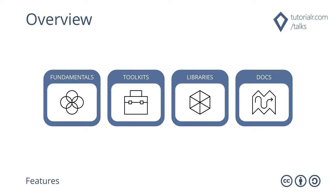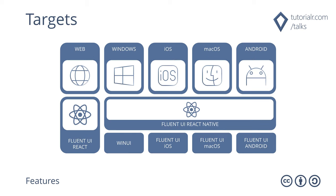Fluent Design System can be implemented in code to deliver coherence through controls and design patterns with UI libraries across a variety of frameworks and languages. It also has a hub for samples, examples, reference documentation and style guides. Targets include developing for the web with Fluent UI React, Windows with WinUI, as well as Fluent UI for iOS, macOS and Android.